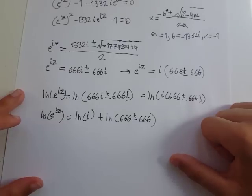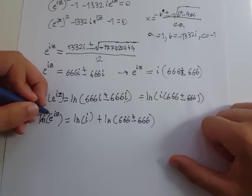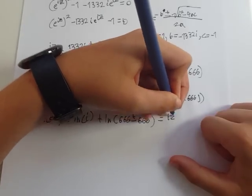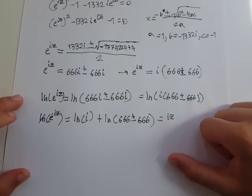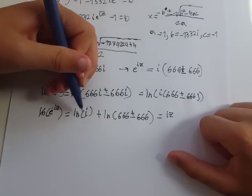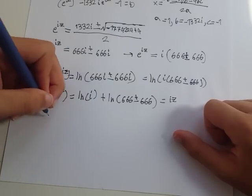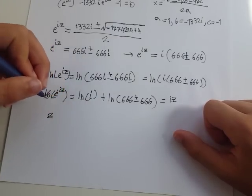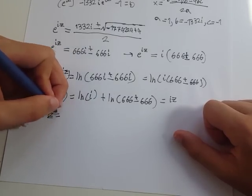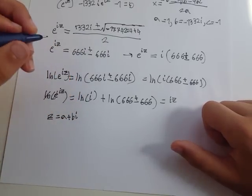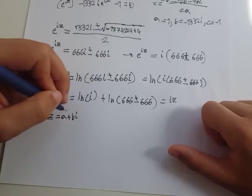These two cancel, so this is iz. Everything is okay except for this. To find what this is, let's look at just any complex number z, which equals the real part plus the imaginary part, a plus bi.